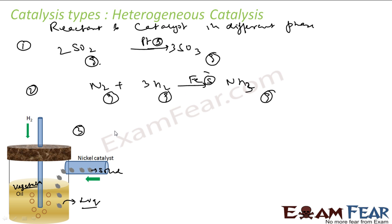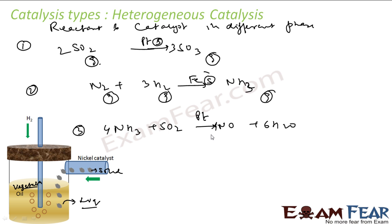A third example is oxidation of NH₃ to form nitric oxide in the presence of oxygen, with platinum as catalyst. Ammonia is gas, oxygen is gas, and platinum is solid — they are in different phases, so this is heterogeneous catalysis.